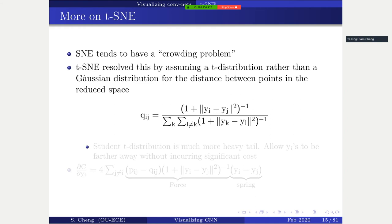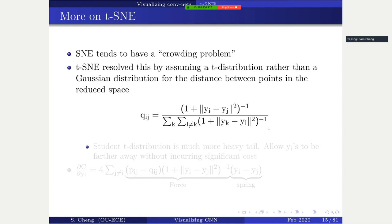t-SNE uses the Student-t distribution instead of the Gaussian distribution. If we do the same derivation, the update rule changes to a similar force-like expression: for each point y_i, you compute a force from each other point y_j, and then move the points accordingly.